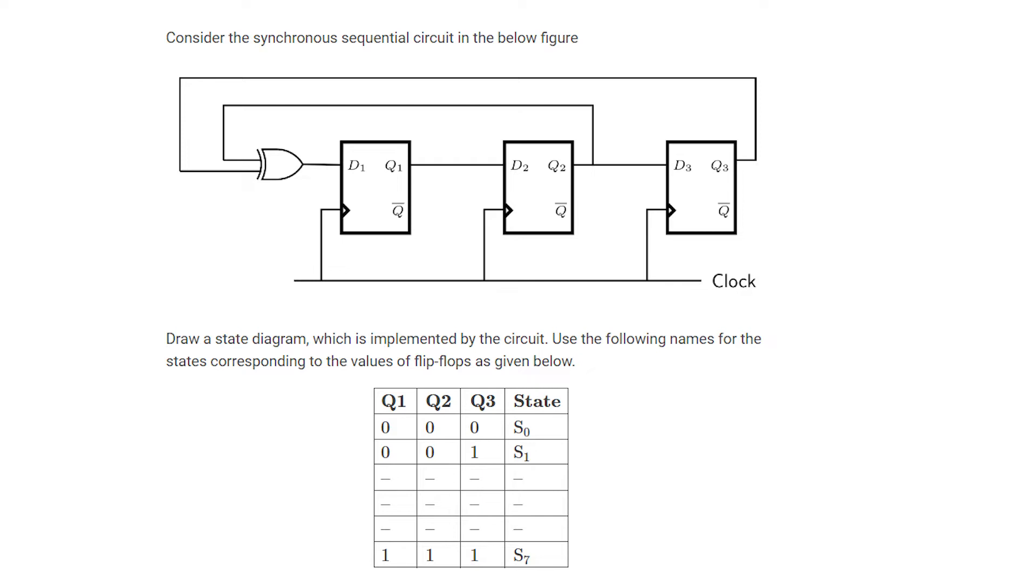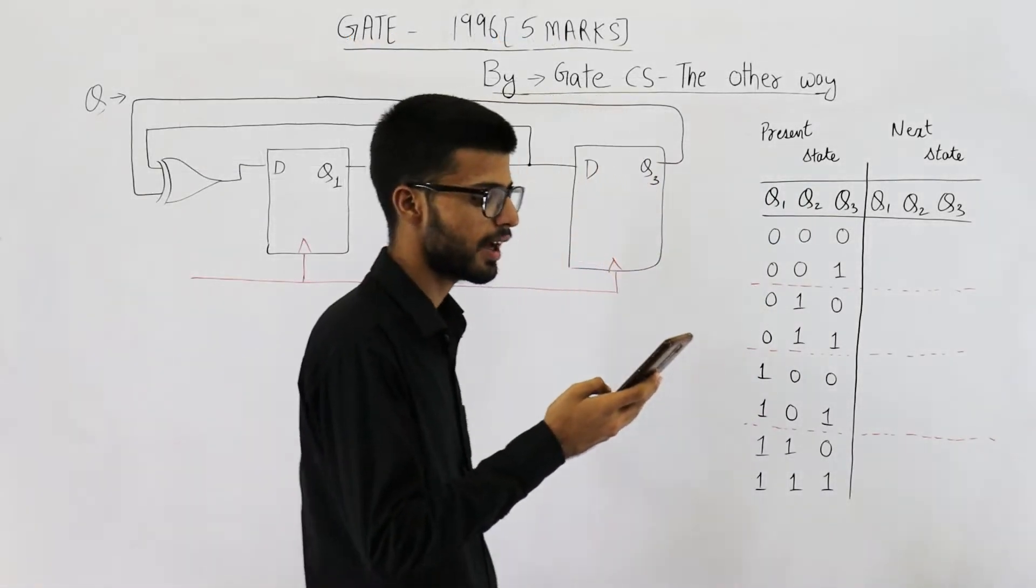From this table, you can see Q1 is the most significant bit and Q3 is the least significant bit. When the values of Q1, Q2, Q3 are 0, 0, 0, the state is S0. When the values are 0, 0, 1, the state is S1, and so on till S7.